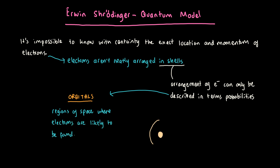So, say we have an atom like this. At any one point, all the electrons in the atom can be found here, or here, or here, or spaced out. And because you can have this strange arrangement of electrons, this model is often called the cloud model.